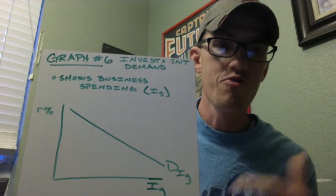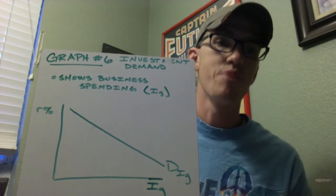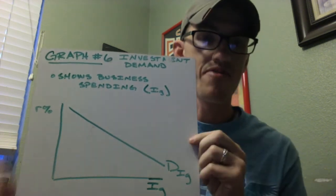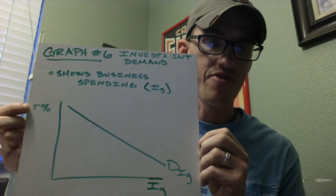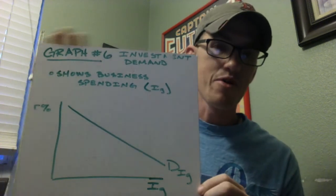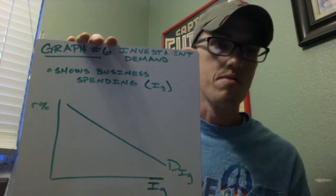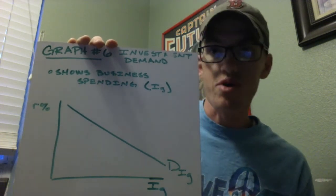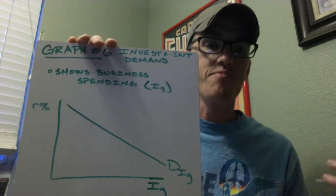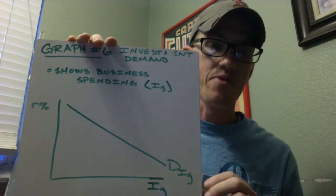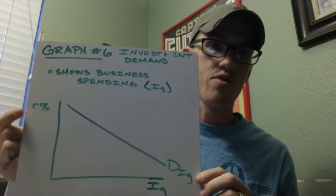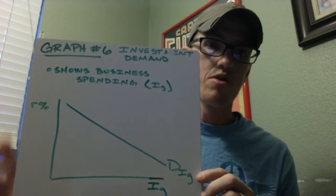Businesses to spend, though, have to borrow. And so the price of business spending is real interest rates. The reason they have to borrow: they're building big things like factories, machines, hiring employees. So they have to borrow in order to do these things. So we have to account for the interest rates to have this spending.